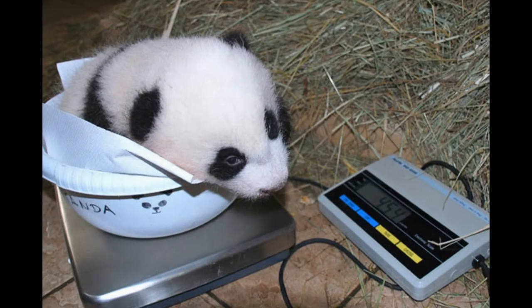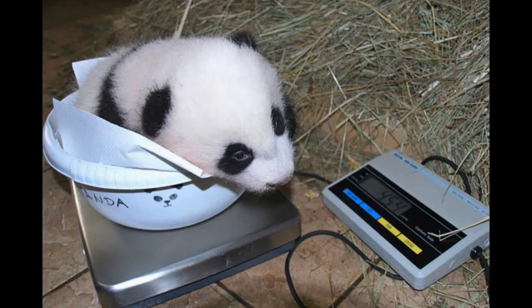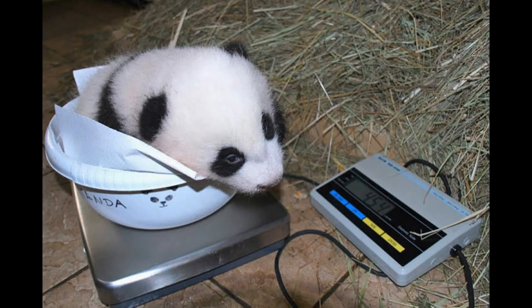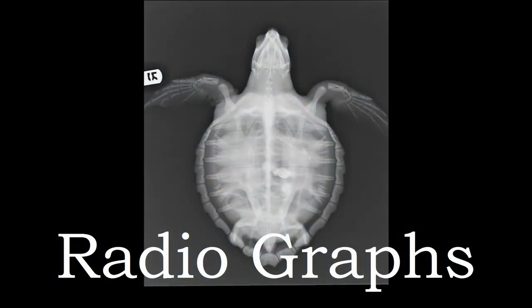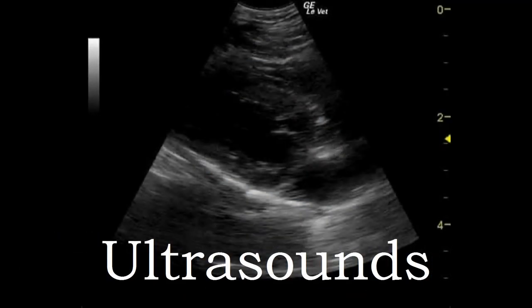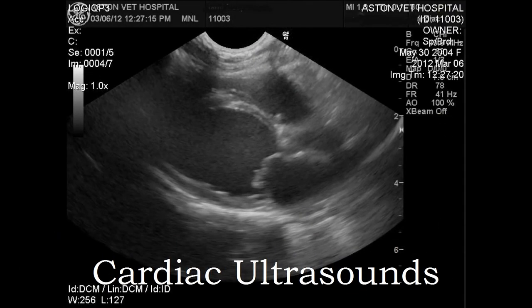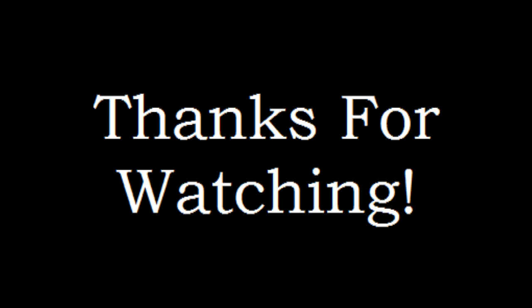It's a baby panda in a bowl — it's so cute! Extra procedures beyond the annual check include nail and hoof trim, TB testing, radiographs, ultrasounds, and cardiac ultrasounds. Thanks for watching. I'm sorry if you got nauseated during the syringe part — I sure did!